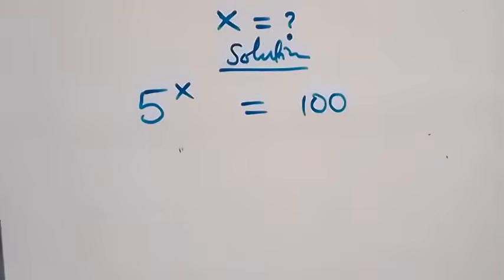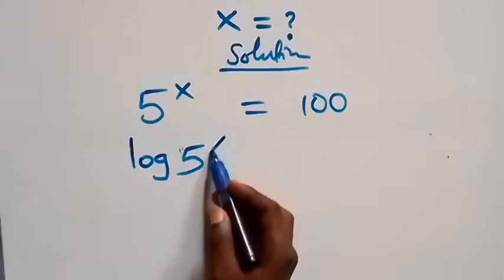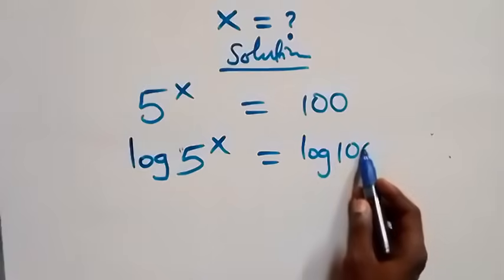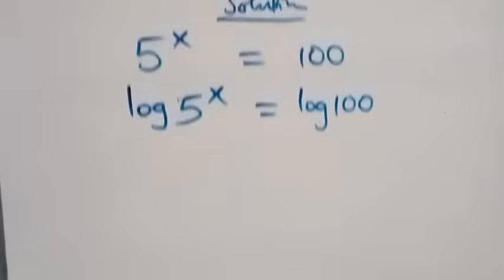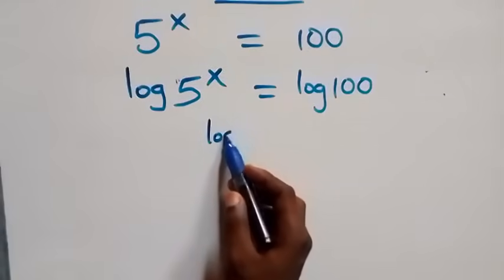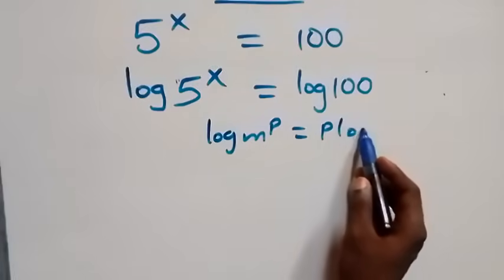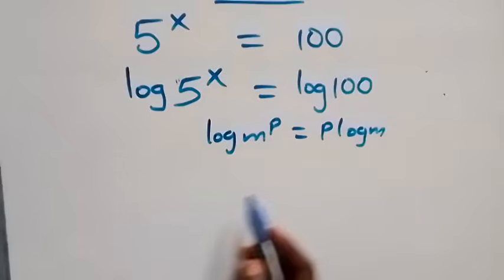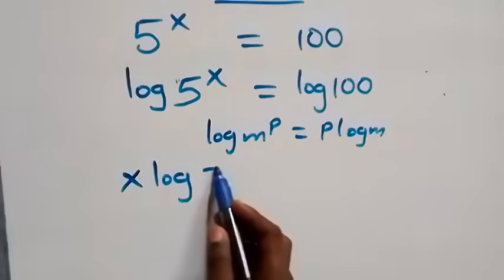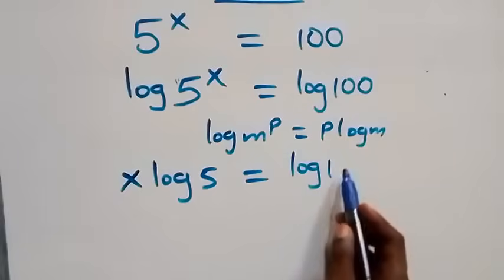We take the log on both sides, so we have log of 5 raised to power x equals to log 100. Then here, applying the power law of logarithms — when we have log m raised to power p, this is the same thing as p·log m — this becomes x·log5 equals to log 100 on this side.